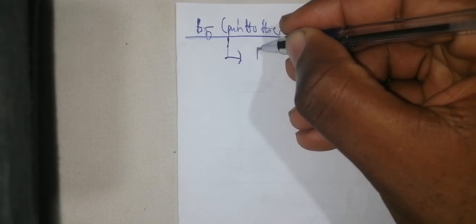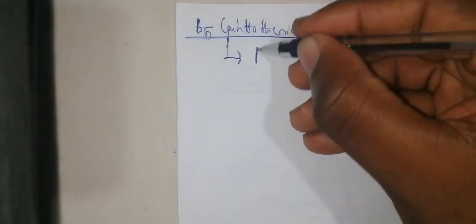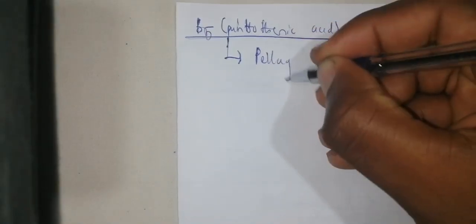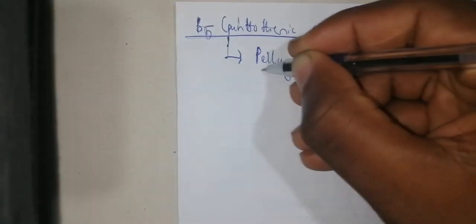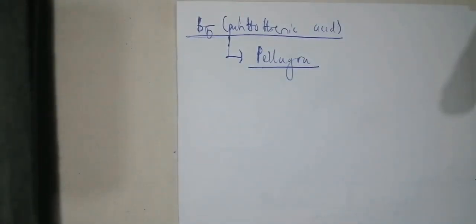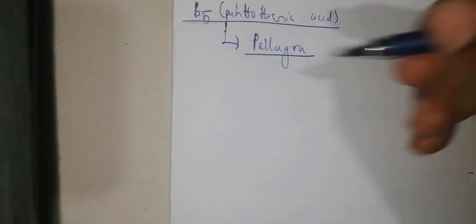Pantothenic acid is involved with skin pigmentation. When you have a pantothenic acid disorder, you are going to have pellagra, with skin hypopigmentation that occurs in cases of kwashiorkor. Basically, when you have kwashiorkor, you have pellagra — it's a sort of vitamin B5 deficiency.